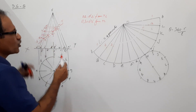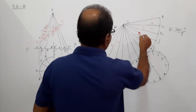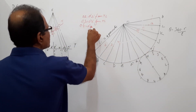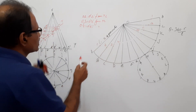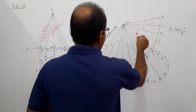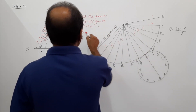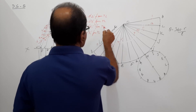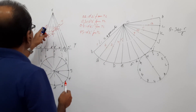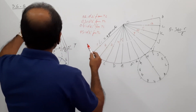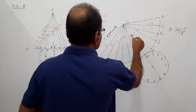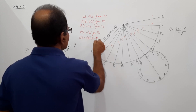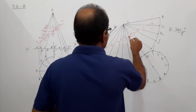Take O dash 3¹ dash and mark here and here to get points 3 and 11. O 3 equals O dash 3¹ dash from true length. Take O dash 4¹ dash and mark here to get point 4 and here to get point 10. O 4 equals O dash 4¹ dash from true length. Take O dash 5¹ dash to get points 5 and 9. O 5 equals O dash 5¹ dash from true length. Take 6 dash and 8 dash similarly. O 6 equals O dash 6¹ dash from true length. Point 7 dash is already on true length, so mark it directly.